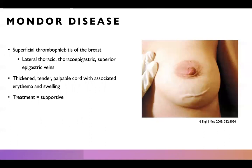The last disease process we'll discuss is Mondor's disease, which is a superficial thrombophlebitis of the breast. It presents as a thick and tender palpable cord with associated erythema and swelling. The most common veins affected are the lateral thoracic, thoracoepigastric, and superior epigastric veins, and the treatment is supportive.